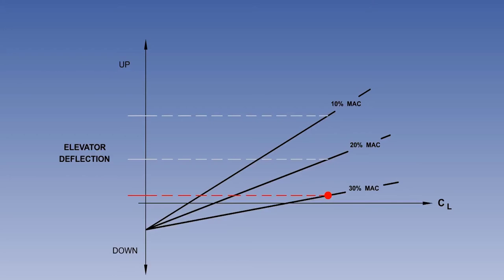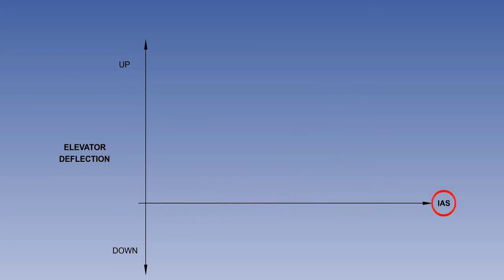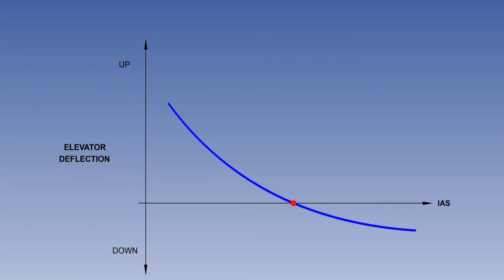This illustrates the increase in aircraft controllability with an aft CG. All aircraft must have stick position stability. This means the aeroplane must require the stick to be moved aft to increase the angle of attack and trim at a lower indicated airspeed, and to be moved forward to decrease the angle of attack and trim at a higher indicated airspeed.